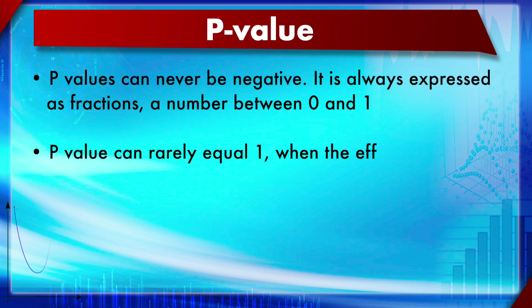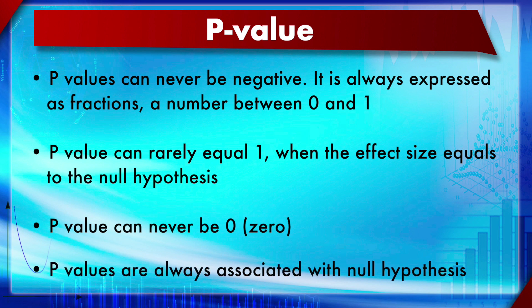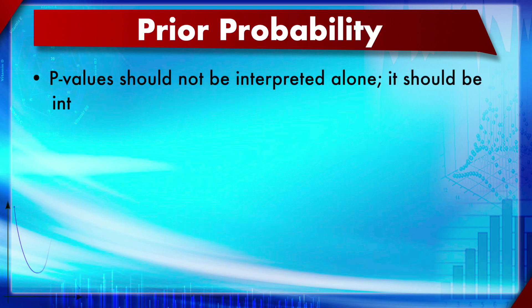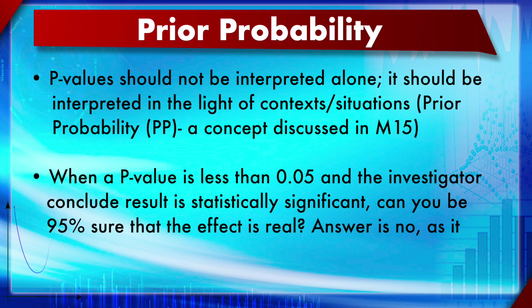P-values can never be negative — they are always a positive fraction between 0 and 1. A p-value can equal 1 in exceptional cases when the effect size equals the null hypothesis, but can never be zero. P-values are always associated with a null hypothesis; without one, the p-value makes no sense. Critically, p-values should not be interpreted alone — they must be interpreted in the context of a null hypothesis and prior probability.